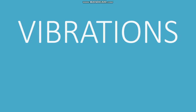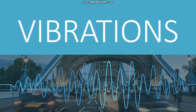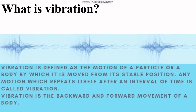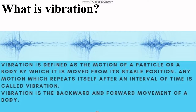In this module, we will study about vibrations. Vibration is defined as the motion of a particle or a body by which it is moved from its stable position. Any motion which repeats itself after an interval of time is called vibration. Vibration is the backward and forward movement of a body — in short, it is the to and fro motion of a body about the mean position.